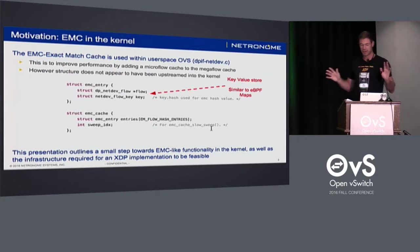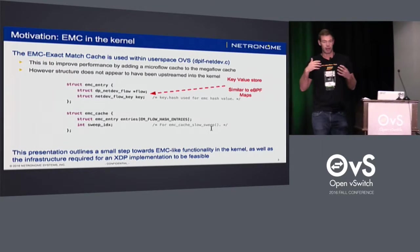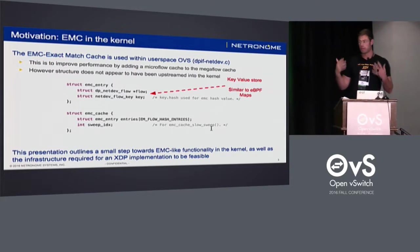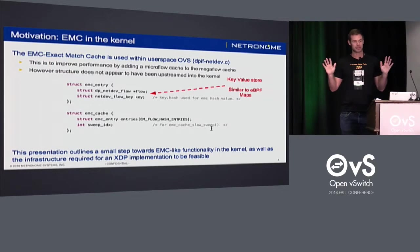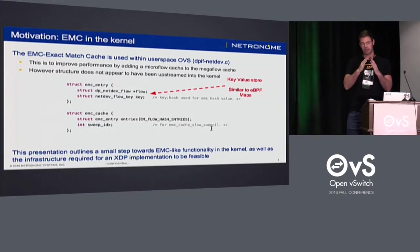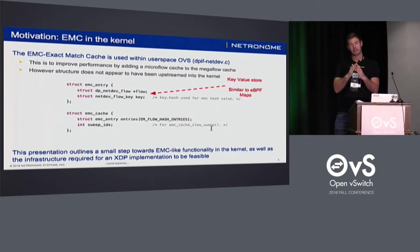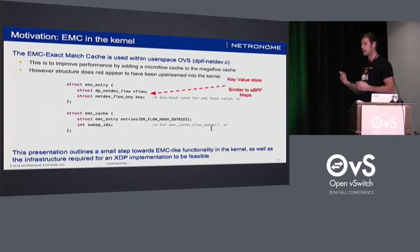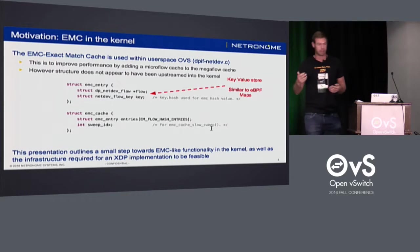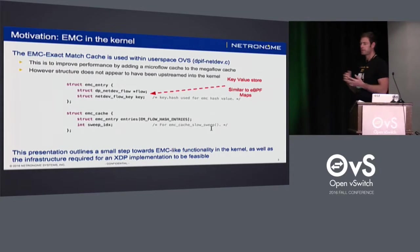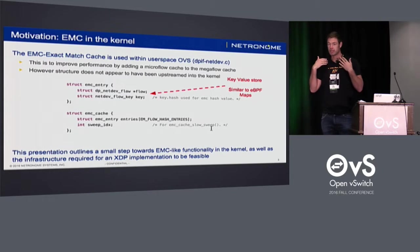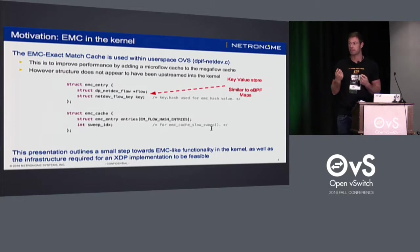Ben spoke earlier about mega flow caching, which is how it really works in the kernel today. Previously, from the history I understand, there was a micro flow cache above the mega flow cache. This still exists within the DPDK userspace implementation, however for reasons Thomas and Ben mentioned, this isn't currently in the kernel. I thought: is there an easy way we could quickly hack this up with XDP and see whether this gives us some interesting performance benefits, and then be able to use this within the kernel.